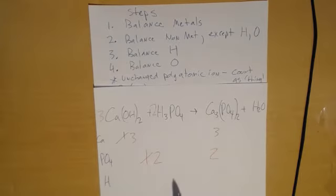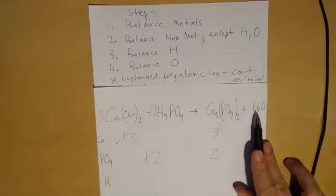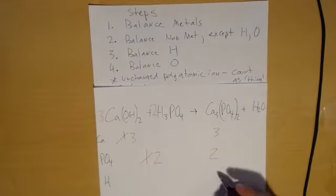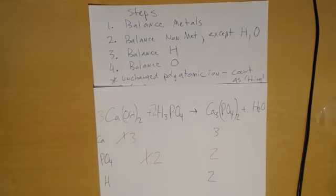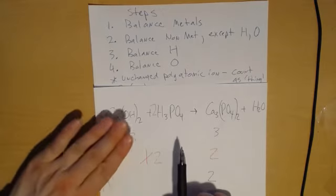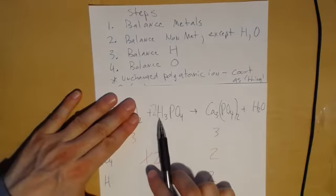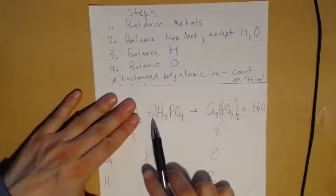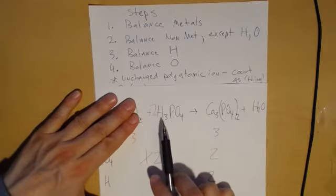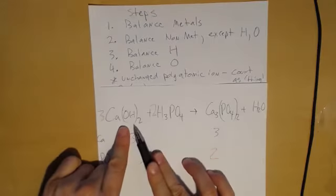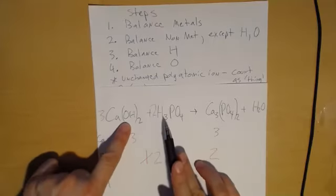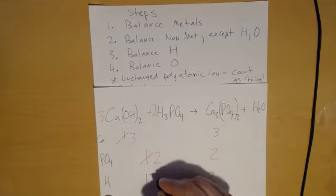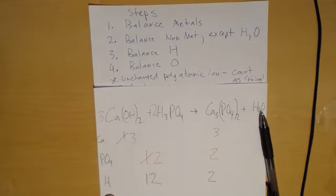Now let's go to hydrogen. How many hydrogens are on the product side? Two. How many on the reactant side? Well, there's a two in front so it multiplies everything — that's actually six. Over here there's three in front so six as well. So actually twelve — someone got that.